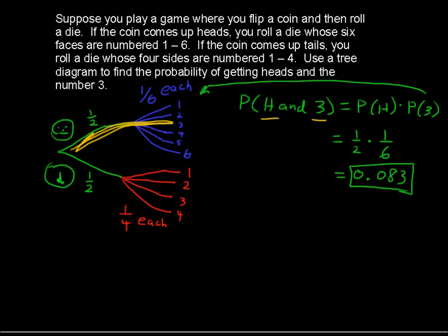Now, if I were to do another one, just to give you another example, what if we wanted to find the probability of getting tails and a 1? Tails and a 1. We are going to highlight or multiply along this set of branches.